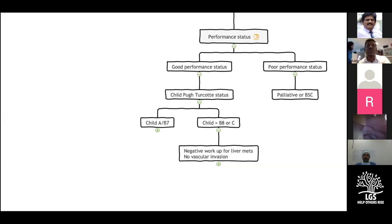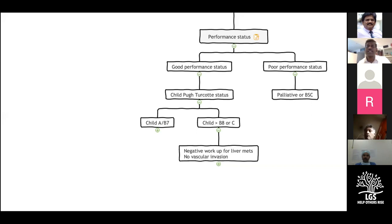My first decision-making point is on the performance status. We go by the ECOG status. An ECOG status less than two, where the patient is ambulant more than 50 percent of the time, is considered a good performance status. Anything on the other side is a poor performance status.